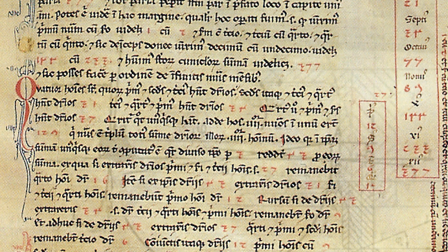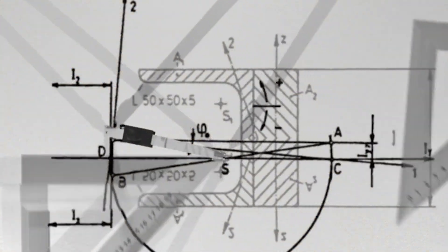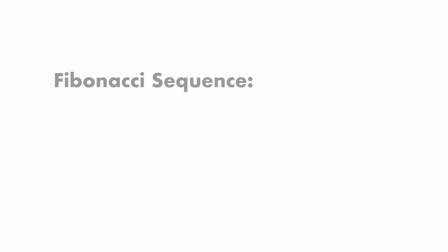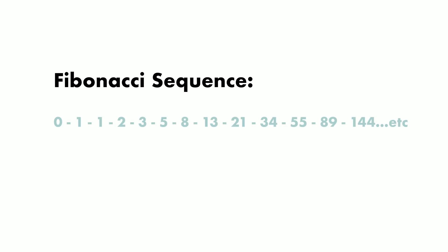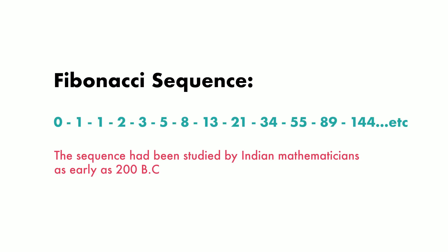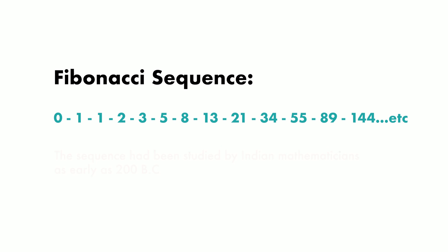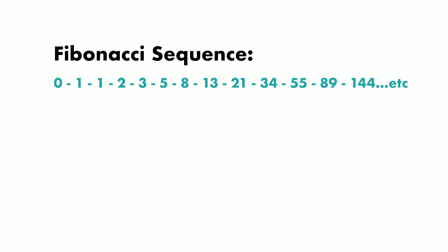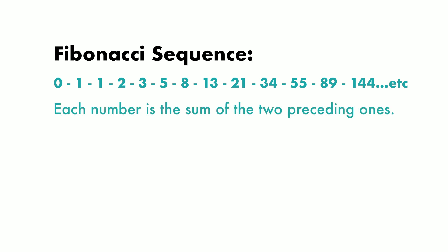Fibonacci, in his book Liber Abbaci, introduced the Fibonacci sequence for the first time, although the sequence had been studied by Indian mathematicians as early as 200 BC. The Fibonacci sequence is defined such that each number is the sum of the two preceding ones.